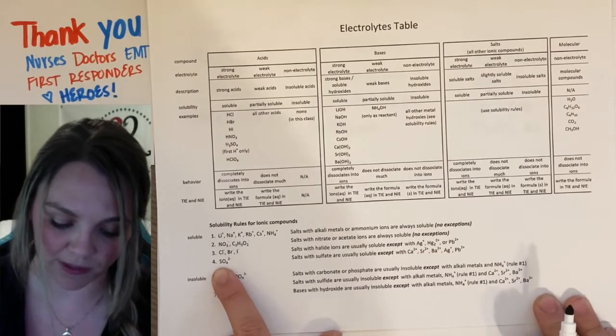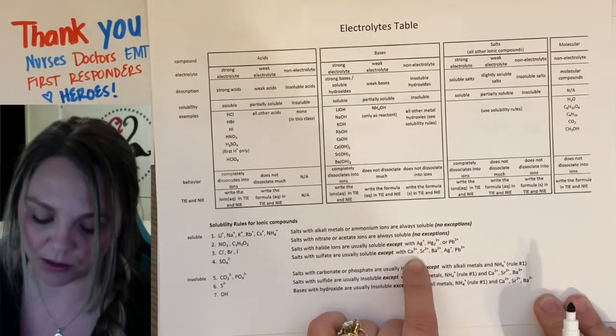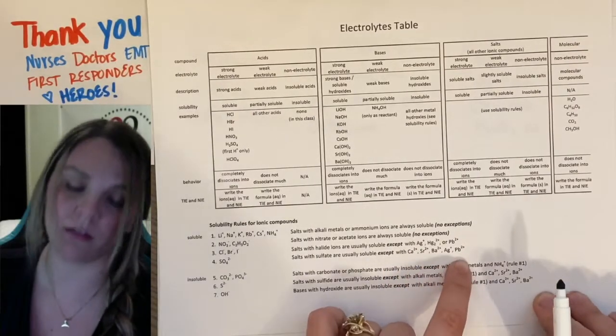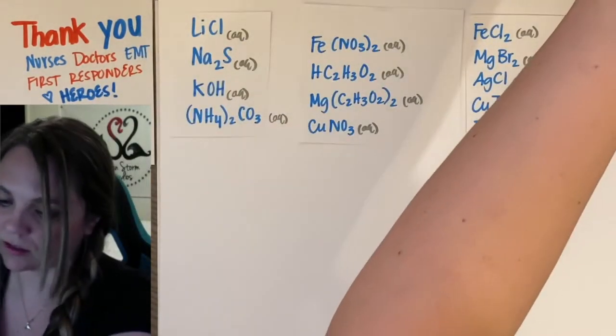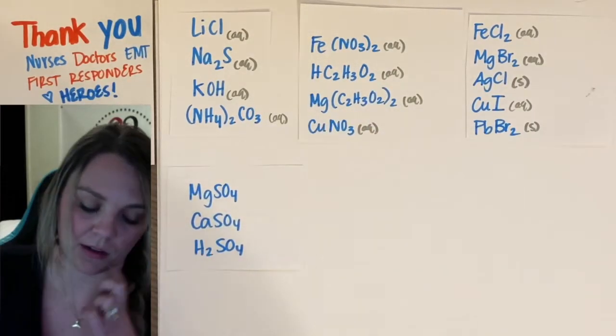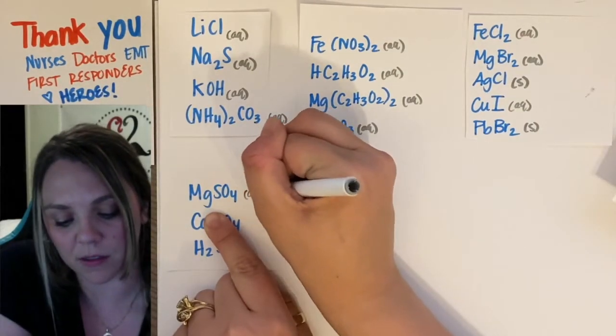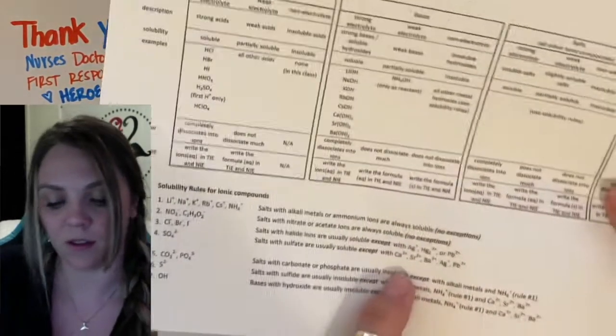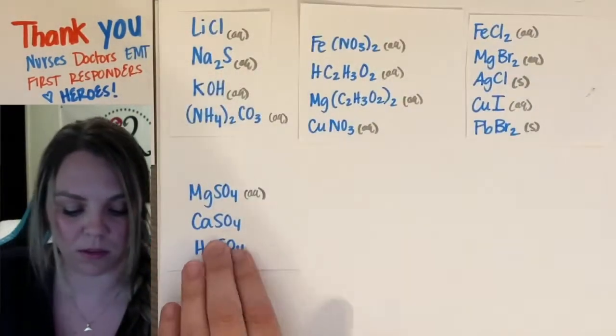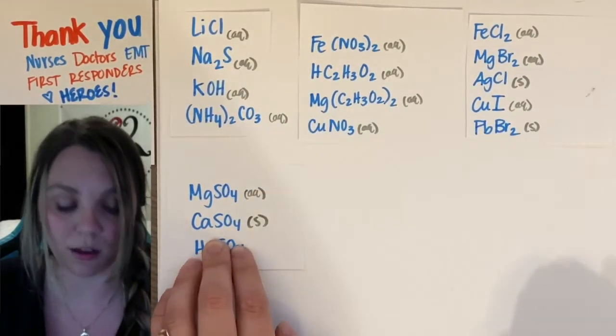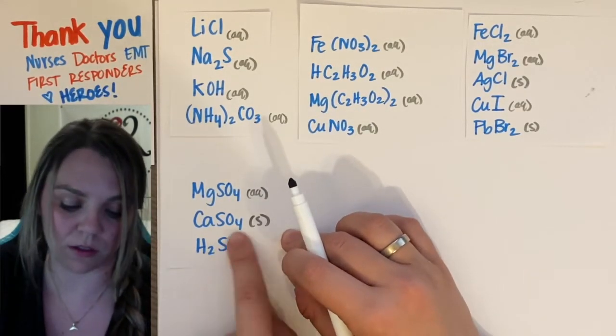Rule four are your sulfates. So, again, sulfates are usually soluble unless or except when they're bonded with calcium, strontium, barium, silver, and lead 2. Same thing. We've got magnesium sulfate. That does not break my rules, so that is aqueous. You have calcium sulfate. That does break my rules. So, sulfate is soluble except with calcium. So, calcium sulfate. Solid. And H2SO4. This would be your sulfate.